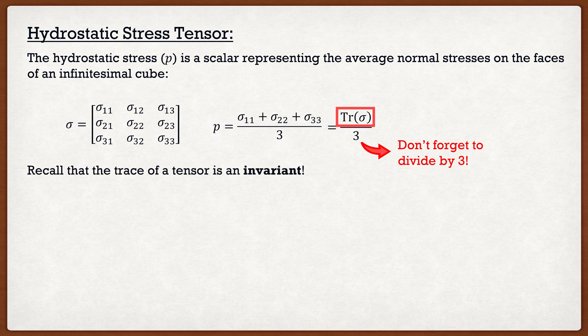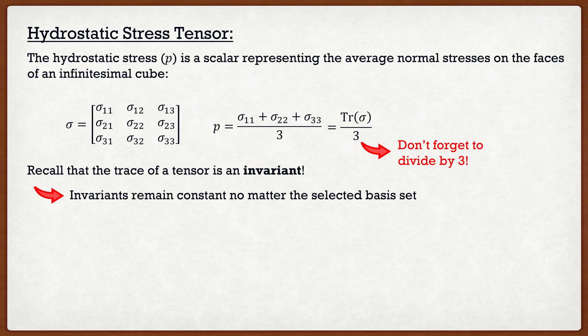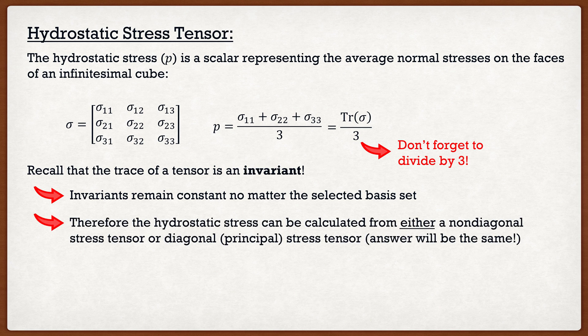Something special about this is that the trace of a tensor is invariant, meaning that no matter what basis set is selected, this trace will never change. Therefore we can calculate this hydrostatic stress from either a non-diagonal stress tensor — the original stress tensor — or directly from the principal stress tensor, the diagonal stress tensor. The answer will be the same no matter what you pick.